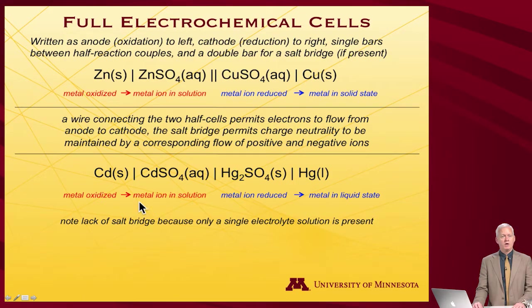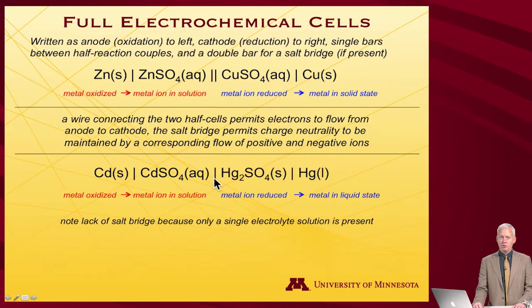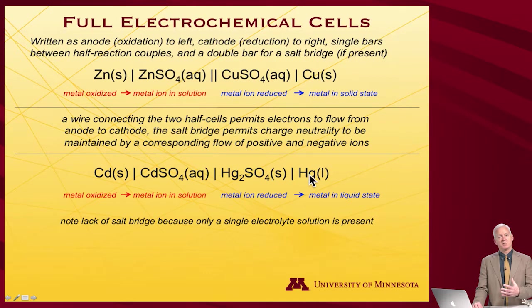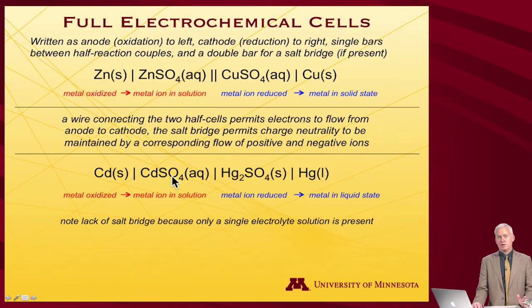Another example: solid cadmium in contact with cadmium sulfate solution as one half cell, and mercury sulfate in contact with liquid mercury as the other. Notice there is no salt bridge involved here, because there's no chance of a short circuit. The right-hand side consists of two pure phases — mercuric sulfate as a solid in contact with liquid mercury — that are not mobile in electrolyte solution. So electrons flow from the anode to the cathode as usual.